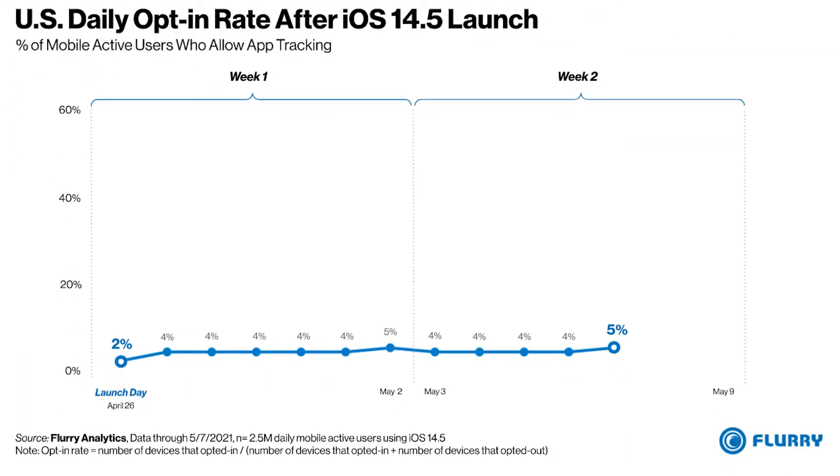Flurry Analytics, owned by Verizon, ran a poll and survey to see how many users in the United States and around the world have actually opted in for tracking. Up until May 8th, only 5% of users in the United States have actually opted in for tracking — meaning 95% of users have opted out. That causes a huge issue and I've seen this in all my ad accounts.